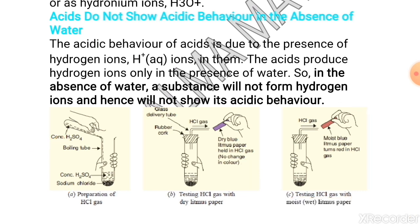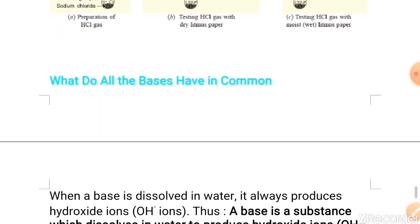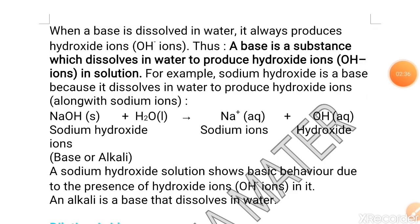Now, we will see what do bases have in common. When a base is dissolved in water, it always produce hydroxide ions, which are OH- negative ions.